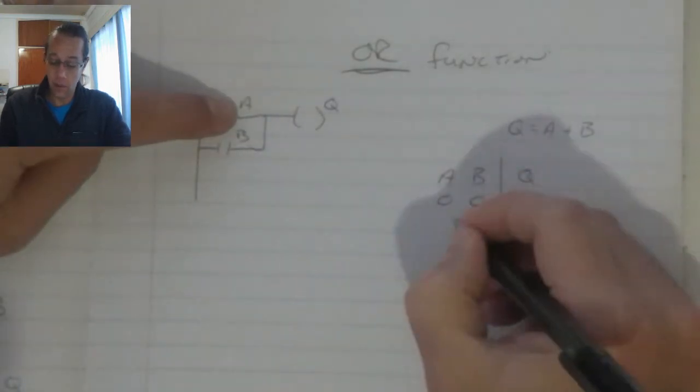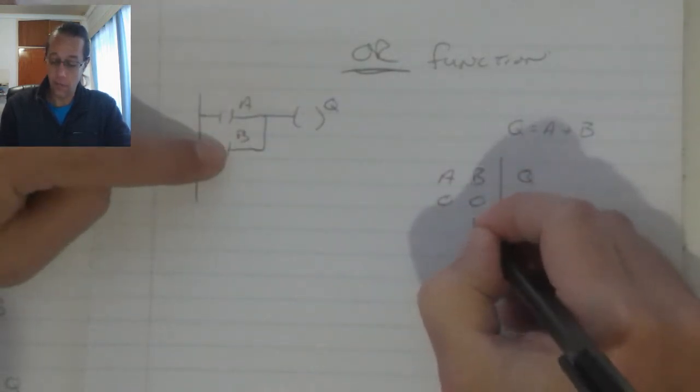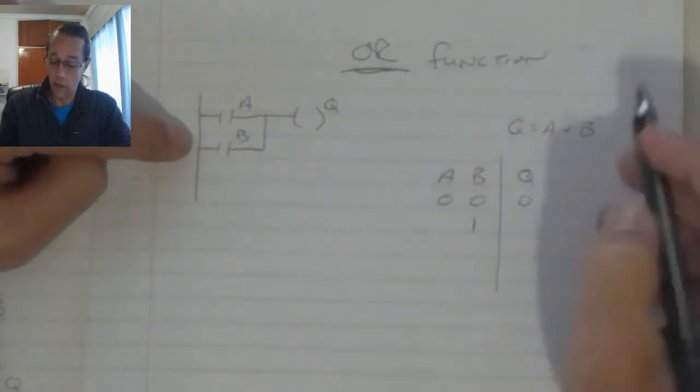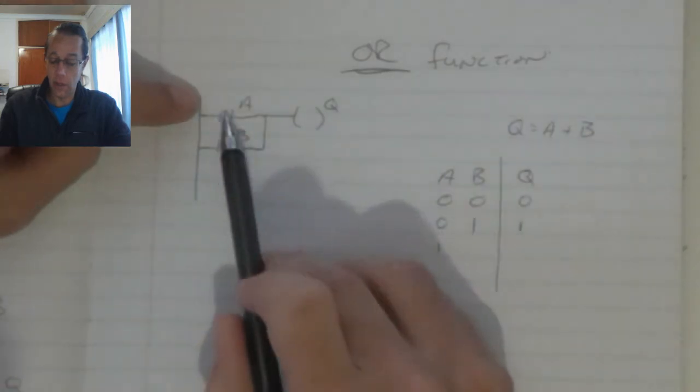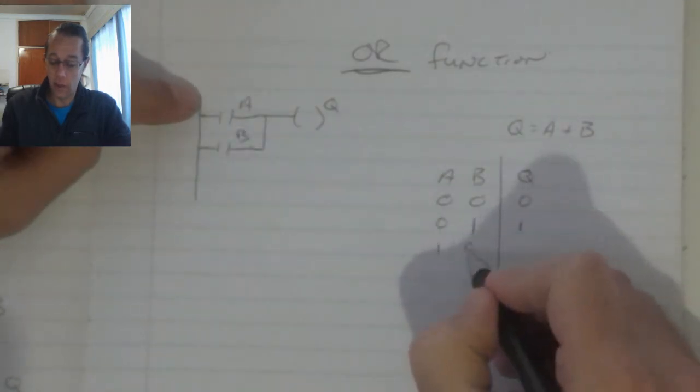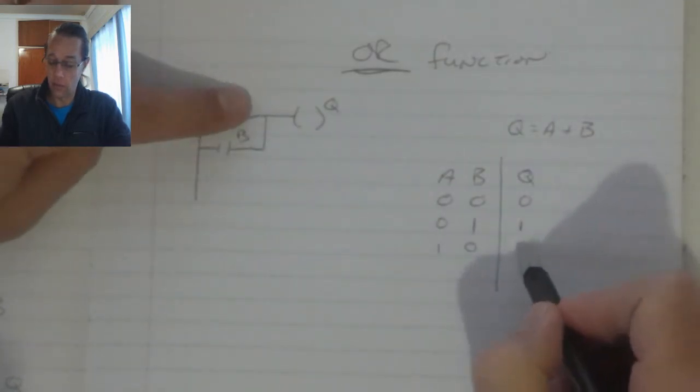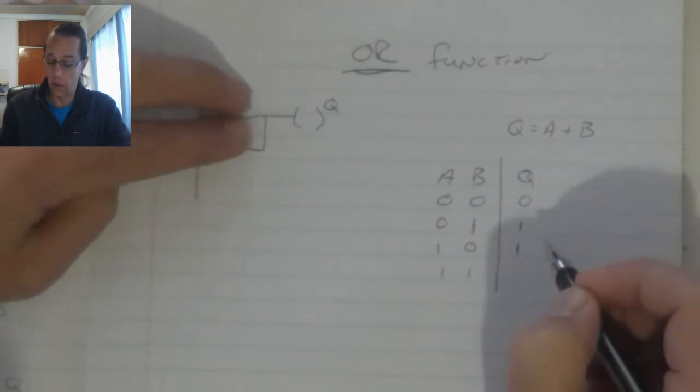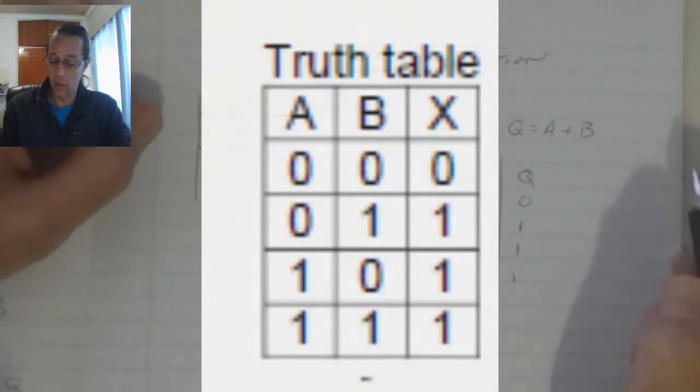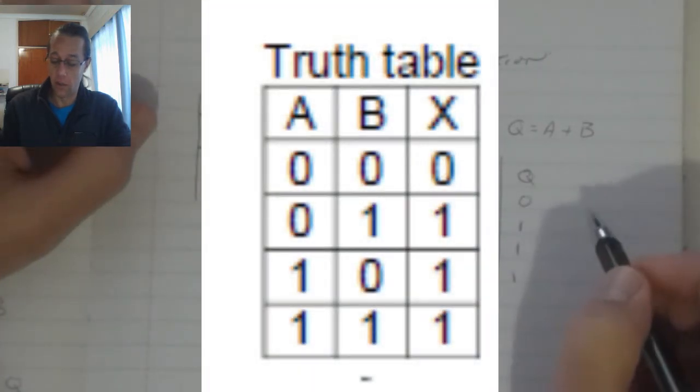The moment I close B, then we've got a connection to Q, so it'll be ON. The moment we close A, we've got a connection to Q, which means it stays ON. And if both are connected, then Q is also connected, which means it is ON.